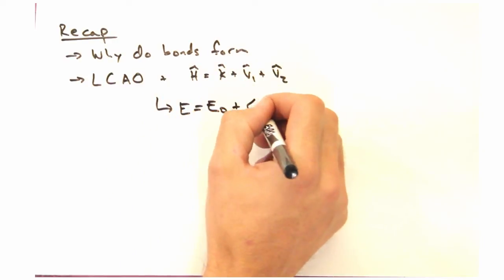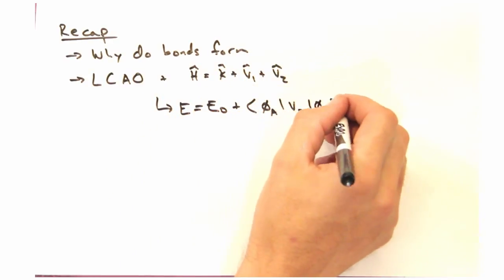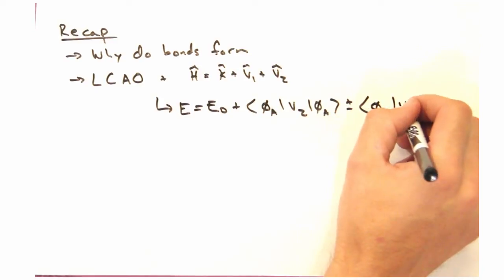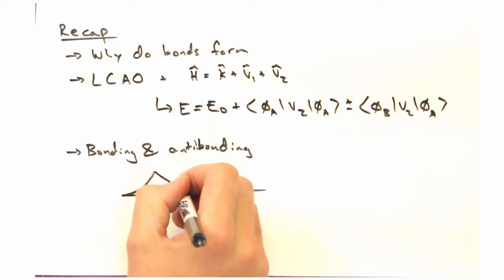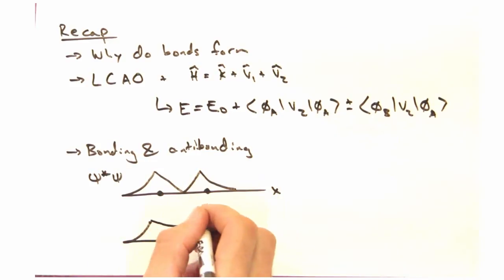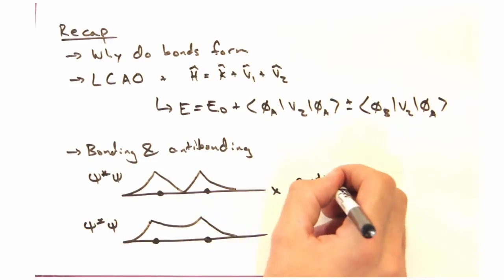Using a linear combination of the atomic orbitals and a simple Hamiltonian, we found a general expression for the energy of the system. We saw the difference between bonding and anti-bonding orbitals, both from an energy perspective and from a wavefunction perspective.